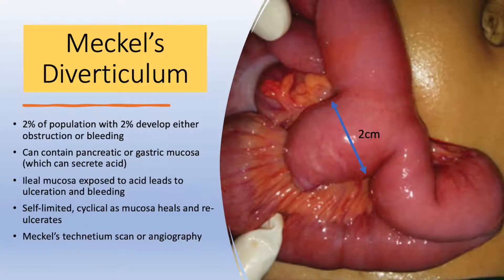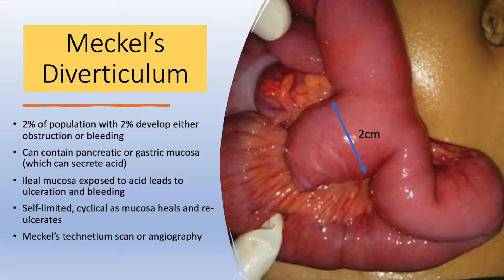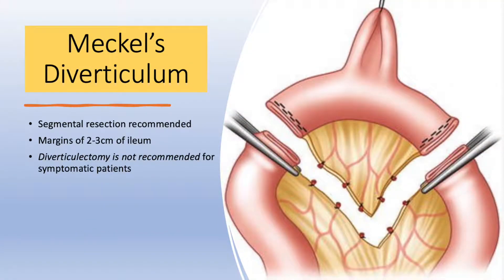A remnant of the vitelointestinal duct, which connects the midgut with the yolk sac, Meckel's diverticulum is present in 2% of the population with a 2-to-1 prevalence in males. These diverticula can contain ectopic tissue such as pancreatic or gastric mucosa. Gastric acid can be secreted, causing ulceration and bleeding of the ileum — usually self-limited but can be cyclical. A Meckel's technetium scan is diagnostic, or angiography if the patient is actively bleeding. A segmental resection with 2-3 cm margins on the small bowel — not a diverticulectomy — is recommended for symptomatic patients.